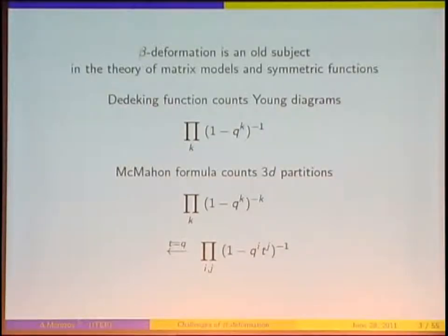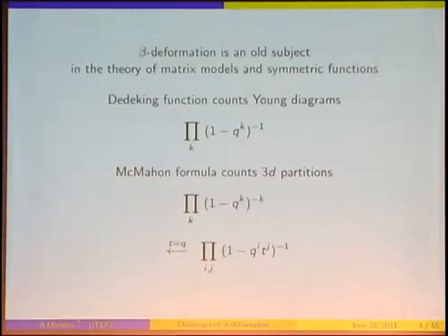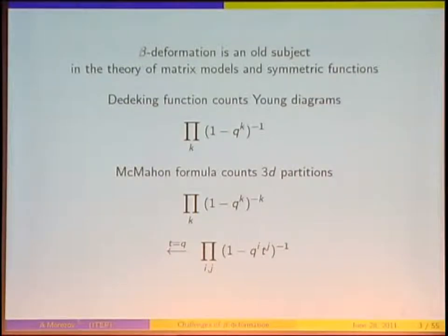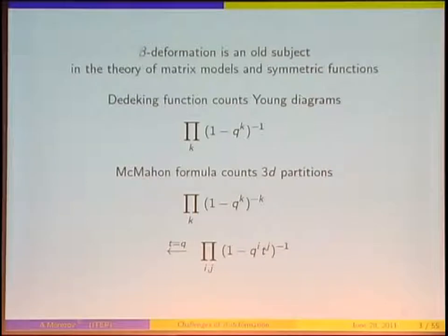So first of all, what is the beta deformation? There are plenty of ways to explain this, but probably the most simple one is just to recall what the Dedekind function is. That's a beautiful thing which appears in many places in string theory, and it counts a number of two-dimensional partitions — the way of putting squares in a corner, or enumerating partitions of an integer into other integers. It has a very old, famous counterpart: the MacMahon function, which counts the number of possibilities to put several cubes into a corner of a room. What is the analog of these functions when you put four-dimensional cubes in the corner of a four-dimensional room? It appears to be a highly non-trivial problem.